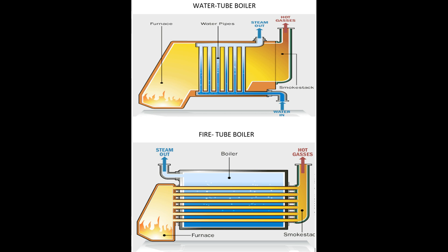More common today are water tube boilers, in which water runs through a rack of tubes positioned in the hot gases from the fire. The following diagram shows a typical layout for a water tube boiler. In a real boiler, things would be much more complicated, because the goal is to extract every possible bit of heat from the burning fuel to improve efficiency.